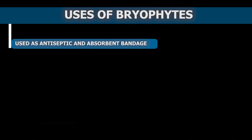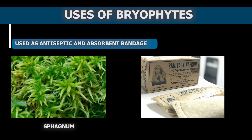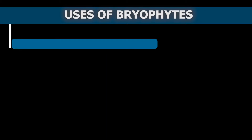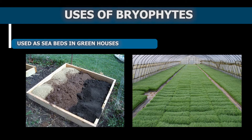Sphagnum is also used as an antiseptic and absorbent bandage in hospitals. It is more liquid-absorbent compared to cotton. Sphagnum is also used as a seedbed in greenhouses, as peat moss can hold water and nutrients for a longer time, helping in the germination of seeds.